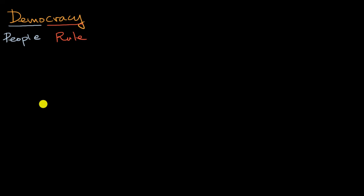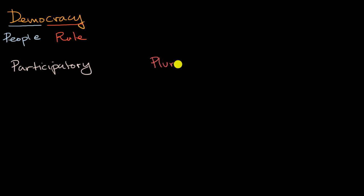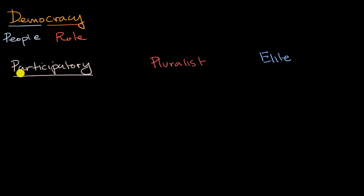Now broadly speaking, we can think of three general flavors of democracy. The first we can consider to be participatory democracy. The second we can call pluralist democracy. And then the third, let's call that elite democracy. As you might have guessed, participatory implies broad participation of the population.